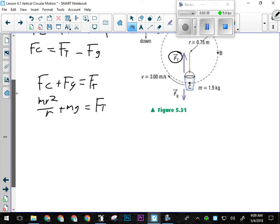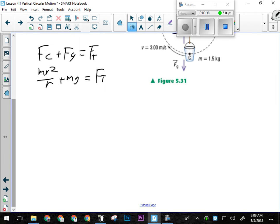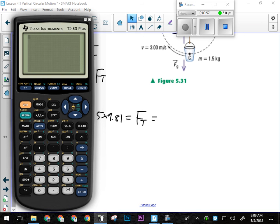So when we plug in our numbers here, we had a 1.5 kilogram bucket. So 1.5 times 3 meters per second squared, and the radius was 0.75 meters, plus 1.5 times 9.81. And that gives us our tensional force. So we got 1.5 times 9 divided by 0.75, so we got 18 there, and then we're adding on the force of gravity, 1.5 times 9.81. So we would need 33 newtons worth of tensional force.